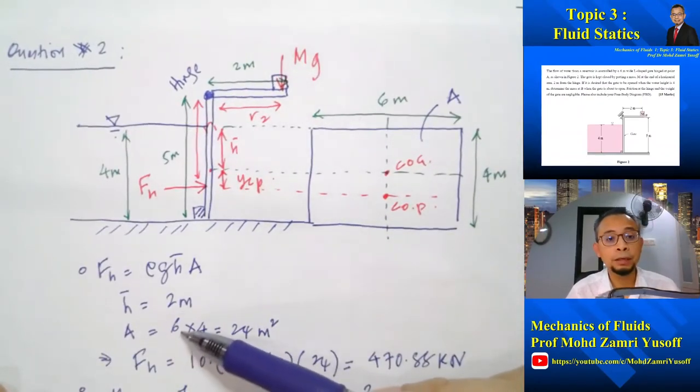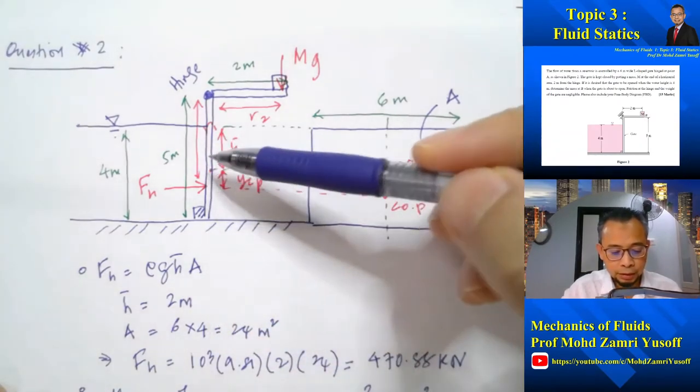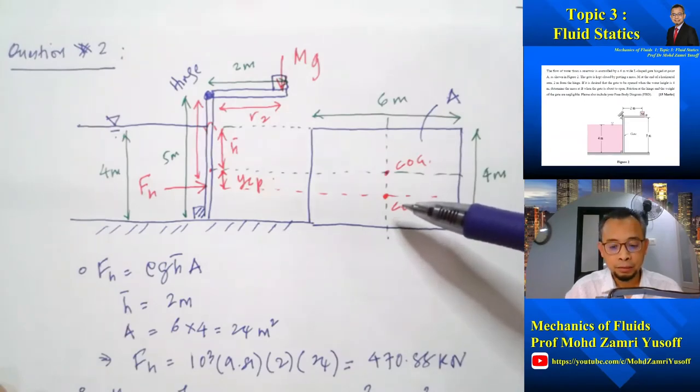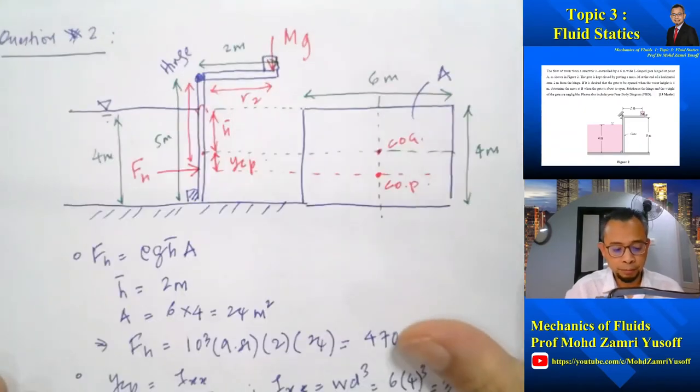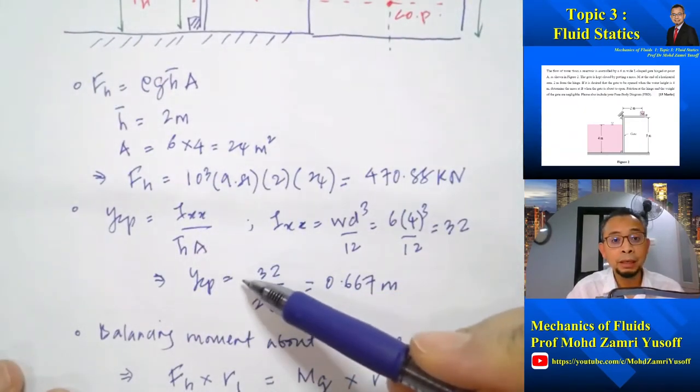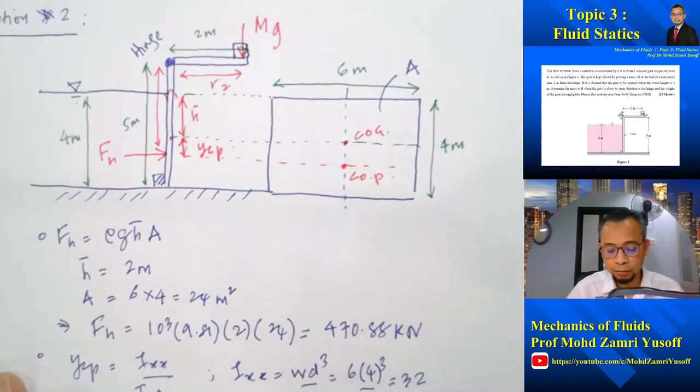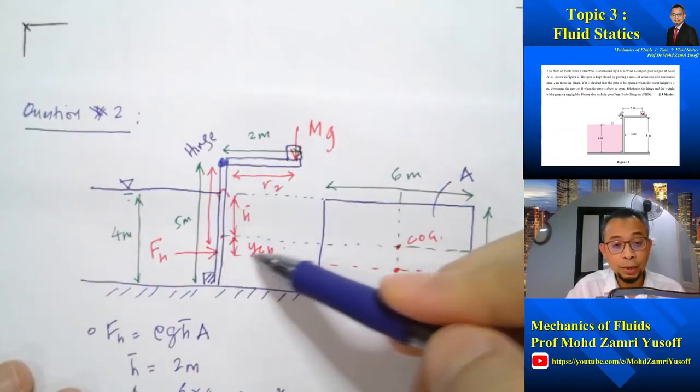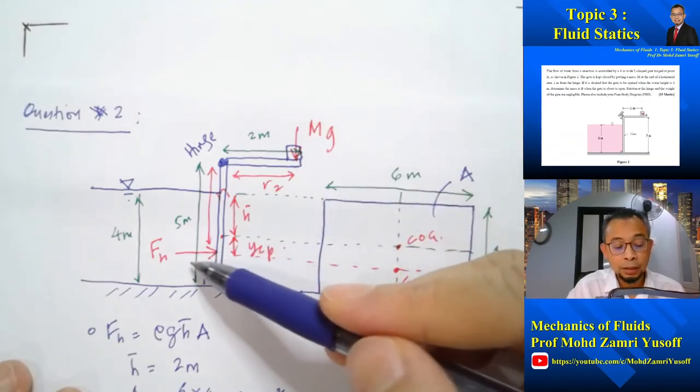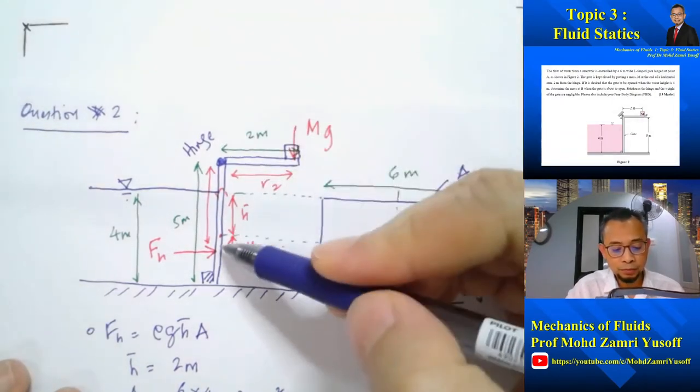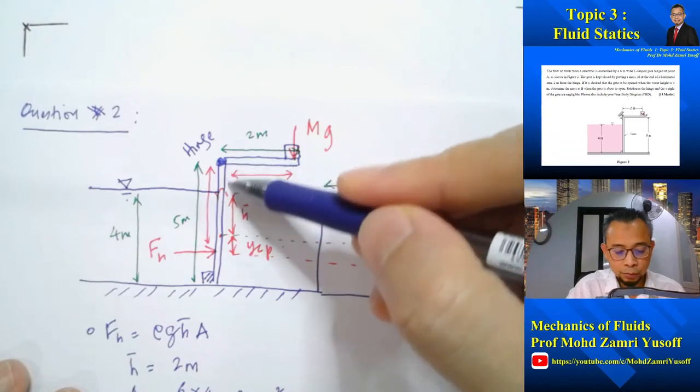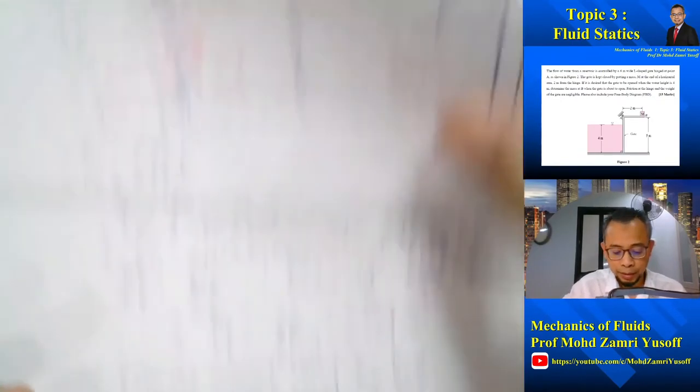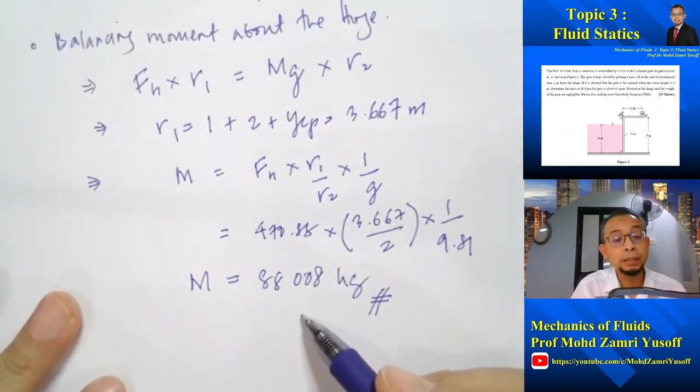So if I recall just now what we did, we calculated the hydrostatic force using rho g h bar A where h bar is the vertical distance from the COG to the water surface, which is 2, and the area is the normal area of the submerged surface, 6 by 4 is 24. That gives us FH. And YCP is Ixx over h bar A where Ixx for a rectangle is width times depth cubed divided by 12, so it's 32. Then finally we just balanced the moment: clockwise moment due to the weight is balanced by anticlockwise moment due to the hydrostatic force. The arm for the hydrostatic force is 1 plus 2 plus YCP, which gives us 3.667, whereas this arm is equal to 2. Balancing that gives us the value of mass equal to 88,000 kilograms.